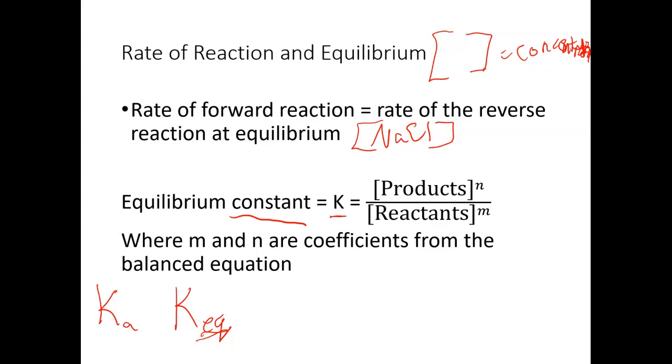So the concentration is in brackets and there's an exponent here, which is the coefficient from the balanced equation. We'll take a look at how we pull that values from the balanced equation in an example.